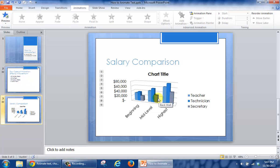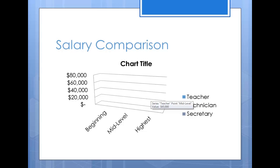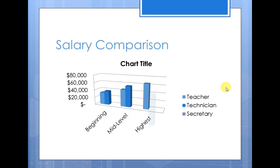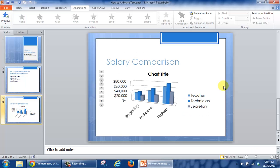At this point I want to see what this particular slide looks like, so on my keyboard I'm going to press Shift+F5 to preview this slide. You can see that as you're doing your presentation, it's presenting each one of these series one by one, making it easier to follow. And with that, I've completed the animation — just press the Escape key. That's all you have to do to animate the elements inside your chart.